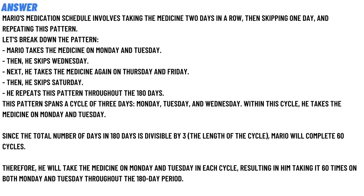Since the total number of days is 180, which is divisible by the three-day length of the cycle, Mario will complete 60 cycles. Therefore, he will take the medicines on Monday and Tuesday in each cycle, resulting in taking 60 times on both Monday and Tuesday throughout the 180-day period. So that's the answer to the question.